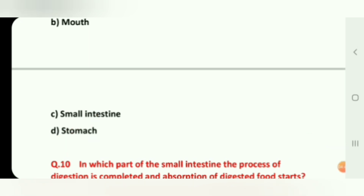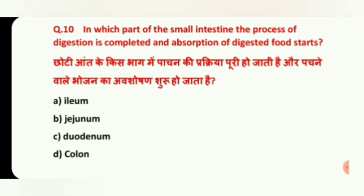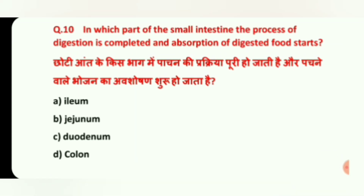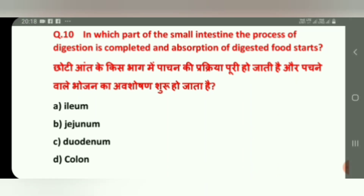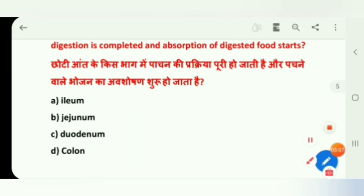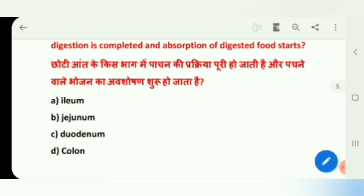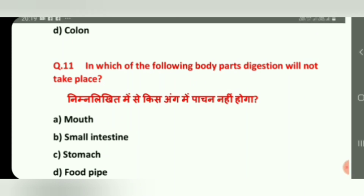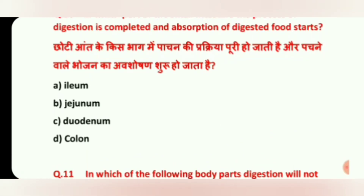Question 10: In which part of the small intestine is the process of digestion completed and absorption of digested food starts? The answer is Ileum.